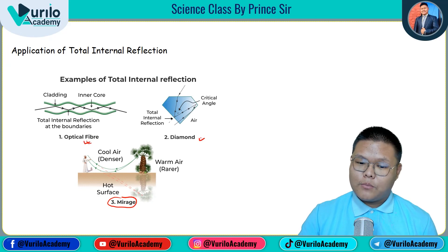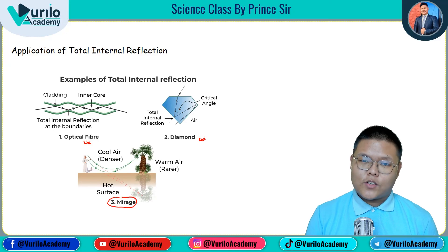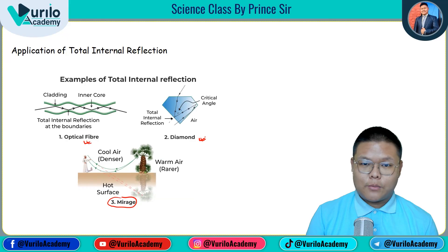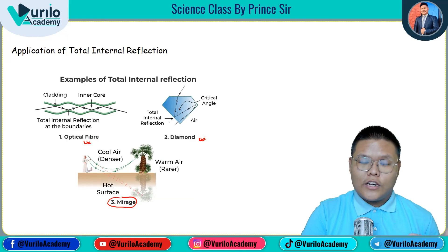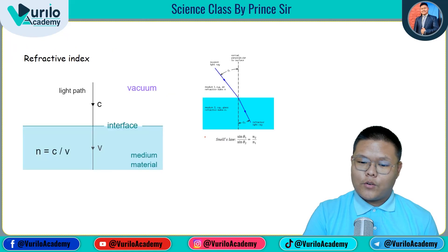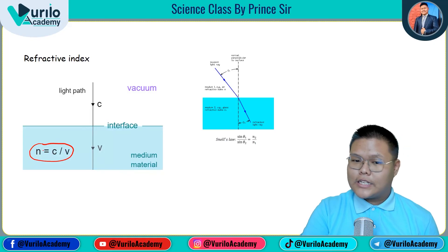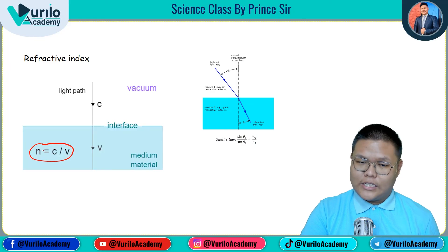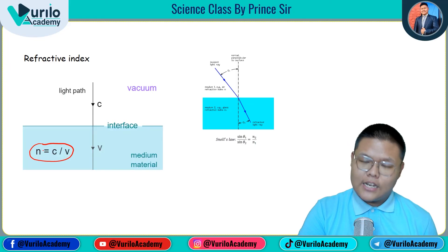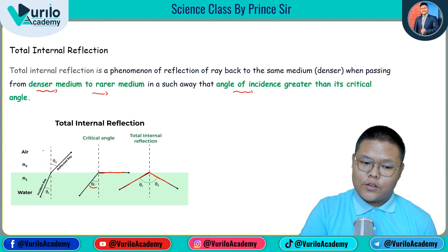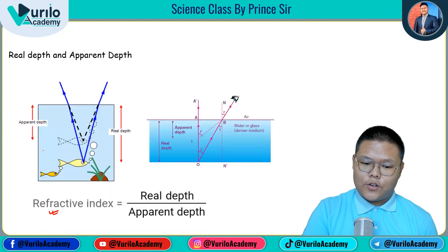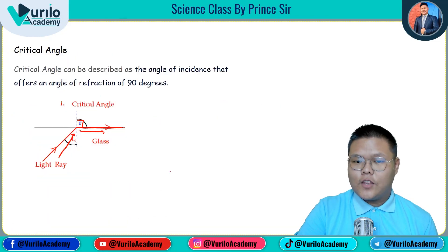The refractive index formula is n = c divided by v. Also remember sin i by sin r for Snell's law, and real depth upon apparent depth. These are the key formulas to remember.